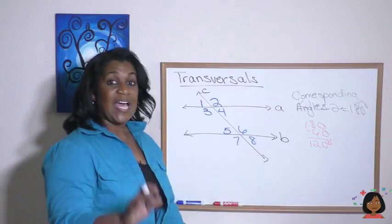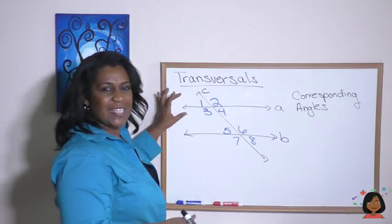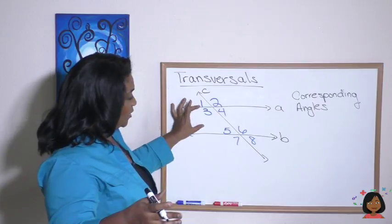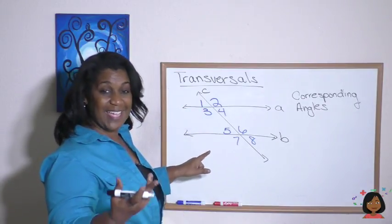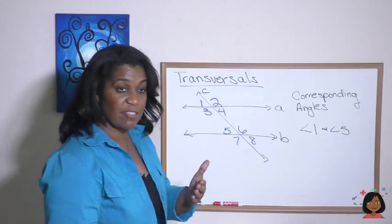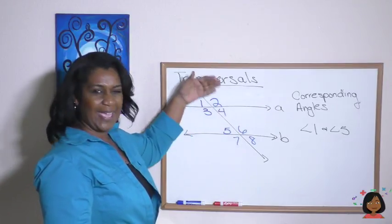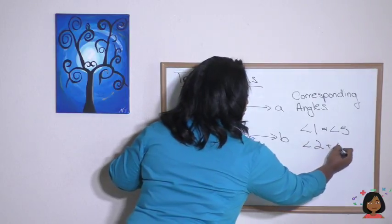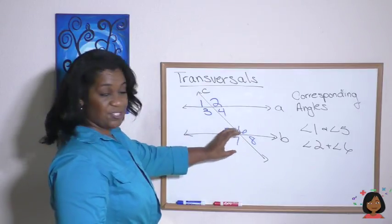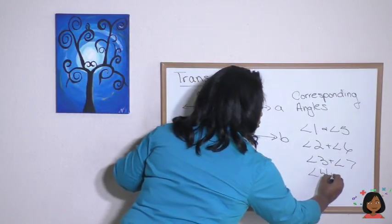Let's move on to another definition: corresponding angles. We're looking for an angle that sits in the same position as angle 1. If we take angle 1 and shift it down, the corresponding angle would be angle 5 — so angles 1 and 5 are corresponding angles. Similarly, angles 2 and 6 are corresponding, angles 3 and 7 are corresponding, and angles 4 and 8 are corresponding.